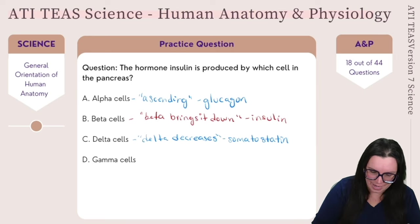Our next question: the period of the cardiac cycle during which the ventricles are filling with blood is known as what? Is it diastole, systole, repolarization, or ejection phase? Let's break each one down.